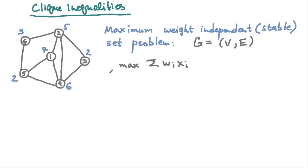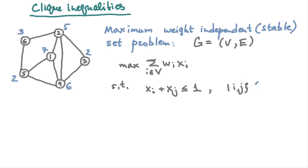We have the following integer programming formulation: maximize the sum of w_i · x_i over all vertices in V, subject to edge constraints. For every edge IJ in E, we have x_i + x_j ≤ 1, meaning we can only pick one of the two vertices if they form an edge. The variables are binary: x_i ∈ {0,1} for every i in V.